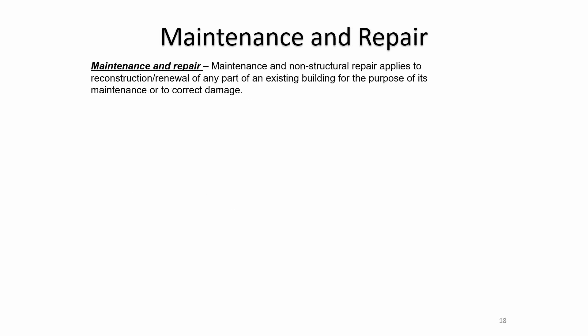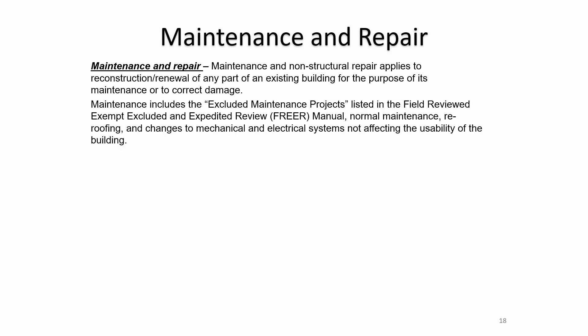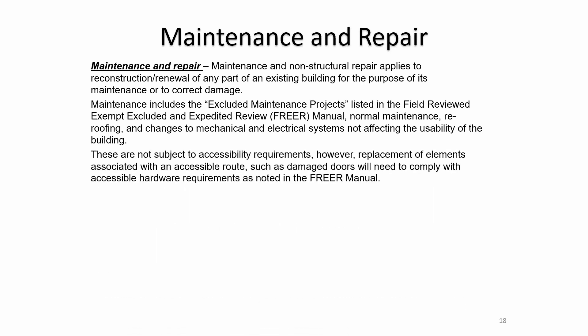Moving on to maintenance and repair. Maintenance and non-structural repair applies to reconstruction or renewal of any part of an existing building for the purpose of maintenance or to correct damage. Maintenance includes excluded maintenance projects listed in the field review manual — normal maintenance, re-roofing, and changes to mechanical/electrical systems not affecting the usability of the building. These are not subject to accessibility requirements. However, replacement of elements associated with the accessible route, such as damaged doors, will need to comply with accessible hardware requirements.